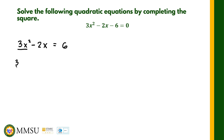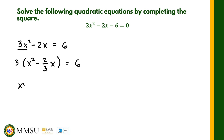Factoring out 3 gives 3(x² − (2/3)x) = 6. We then divide both sides by 3, which gives us x² − (2/3)x = 2. Now the coefficient of x² is 1, so we can proceed to complete the square.